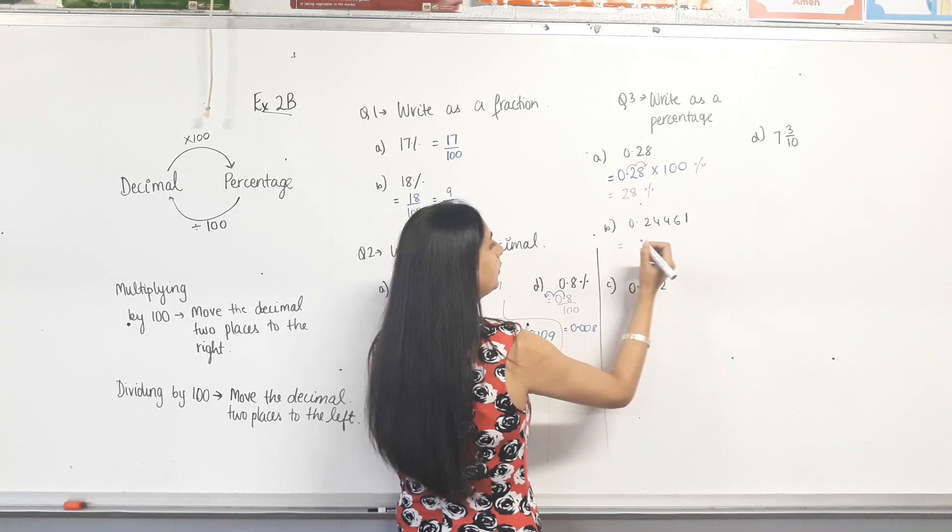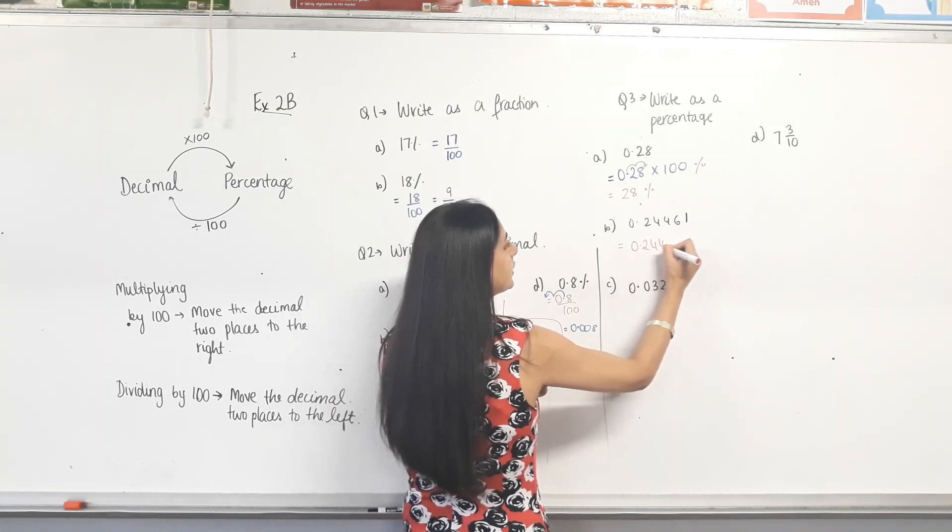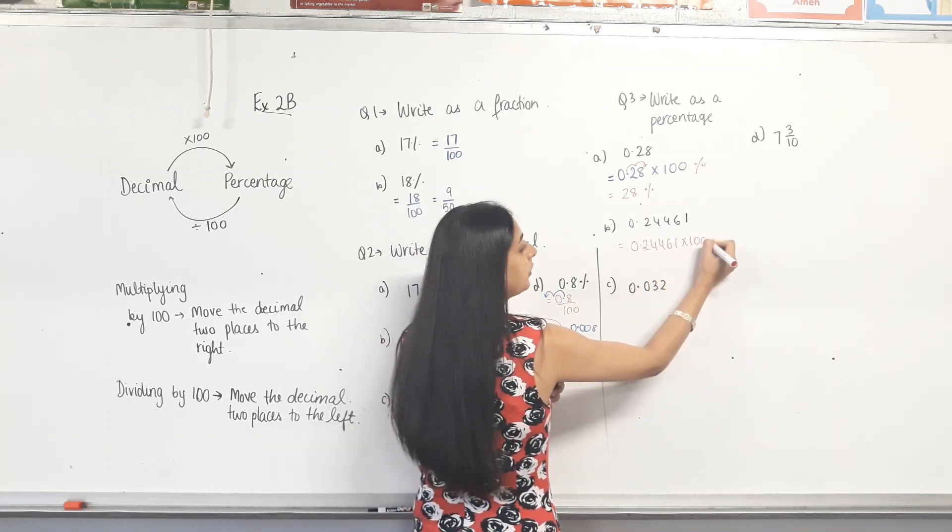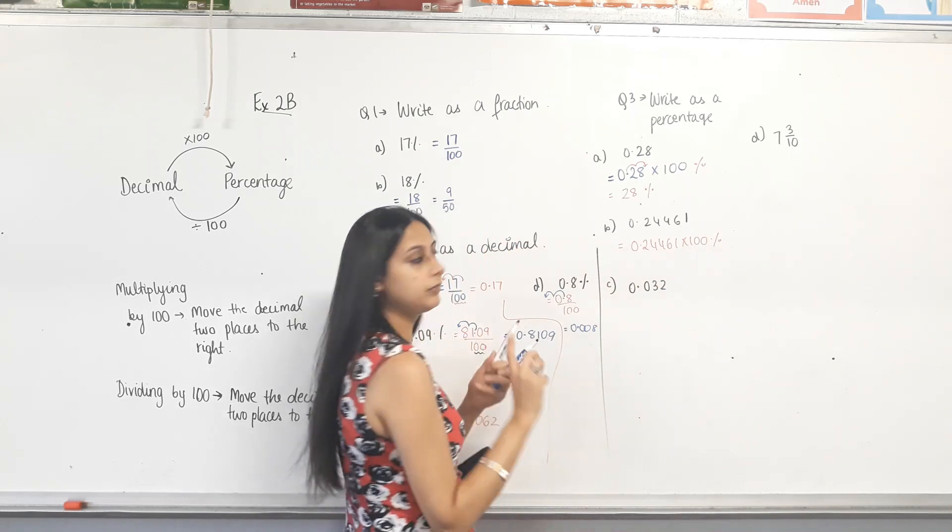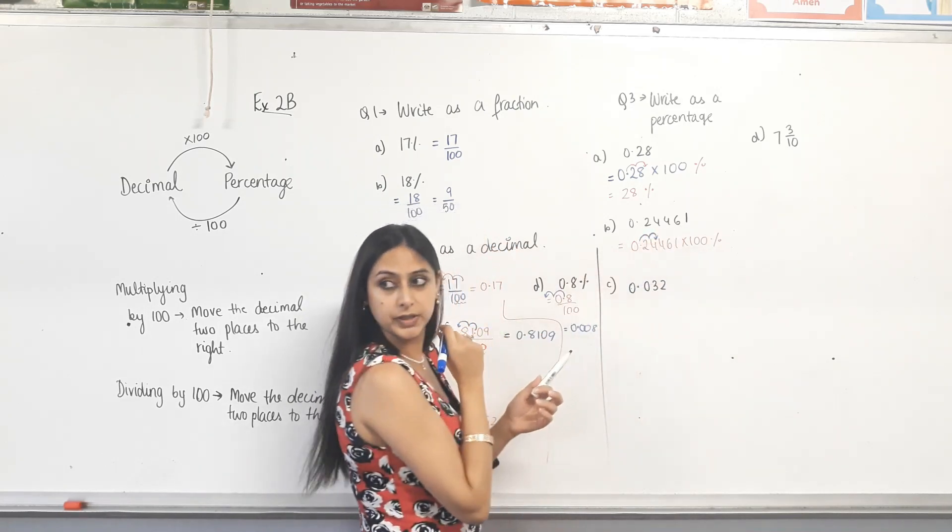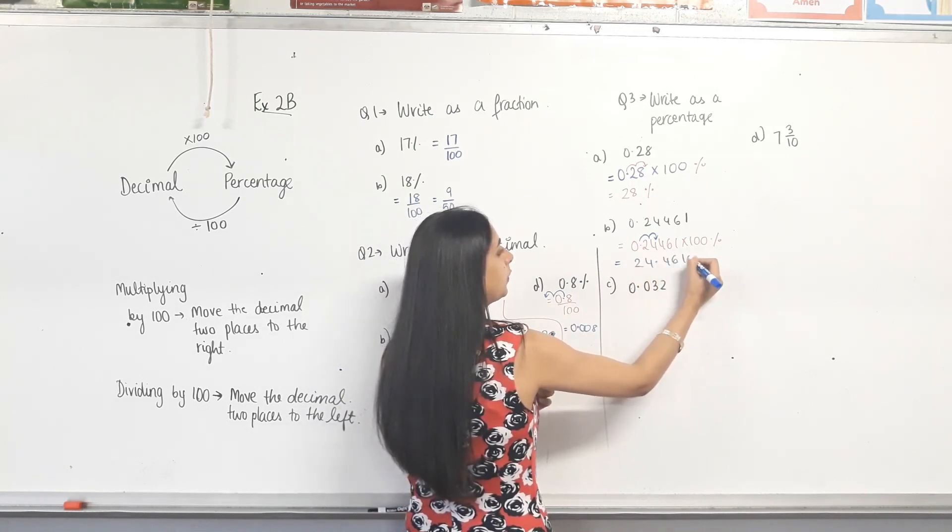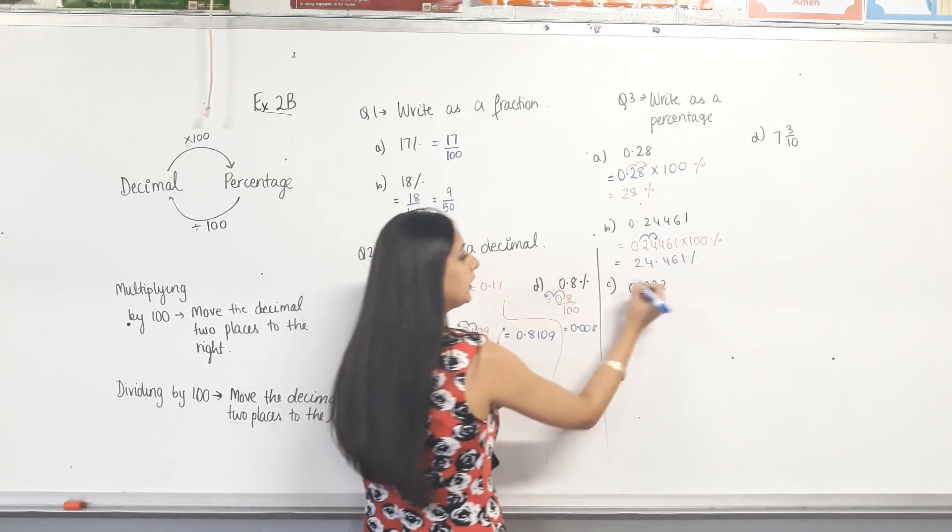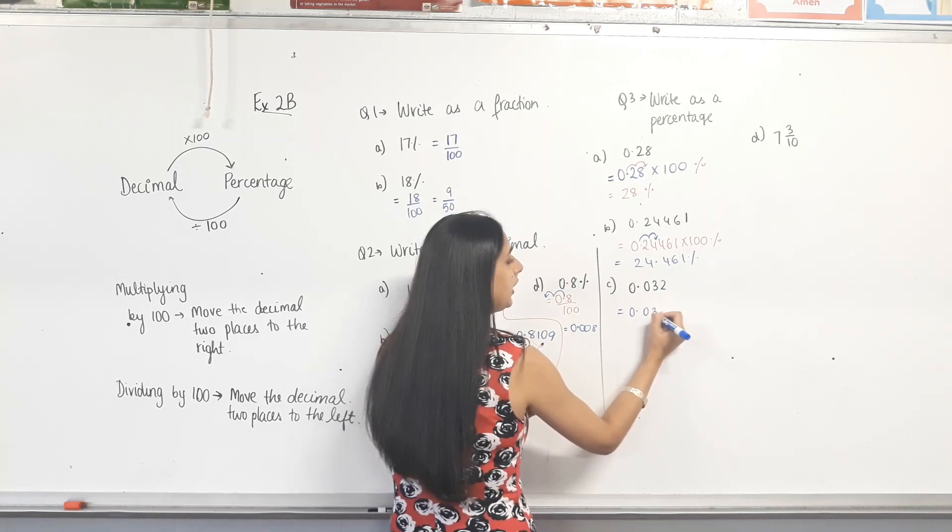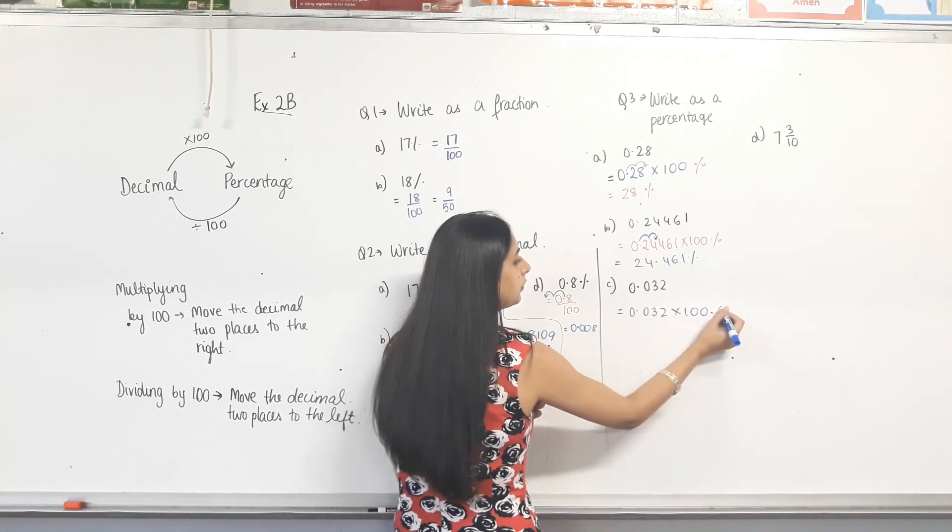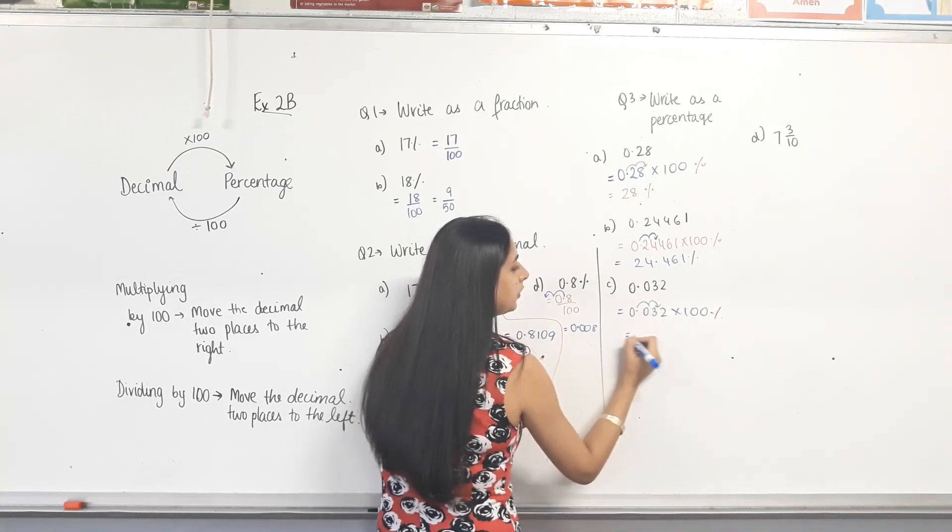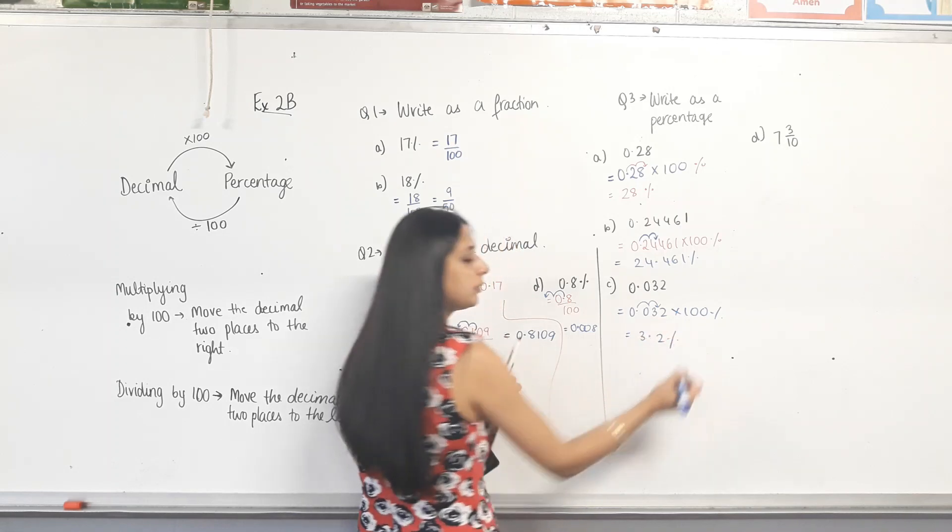So, 0.24461 times 100 percent. Moving the decimal two places to the right. 24.461 percent. Moving the decimal, how many places to the right? Two. 3.2 percent.